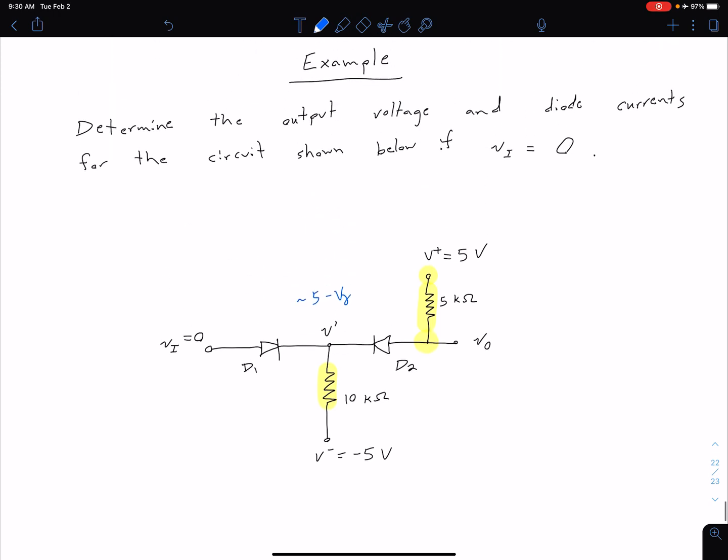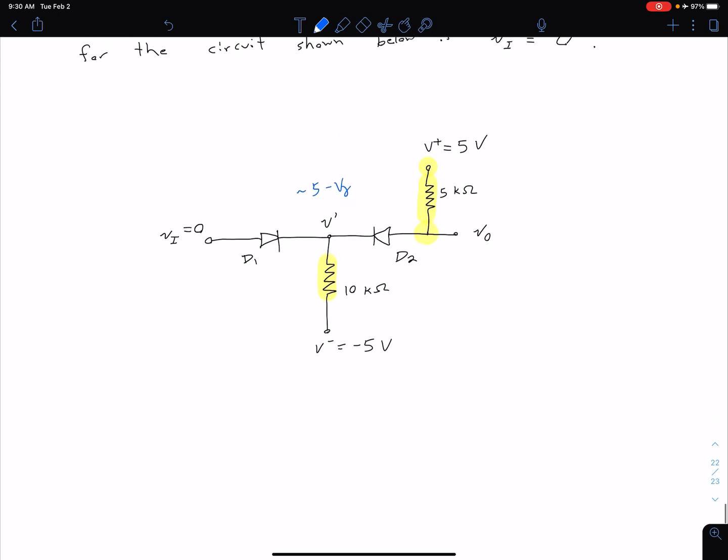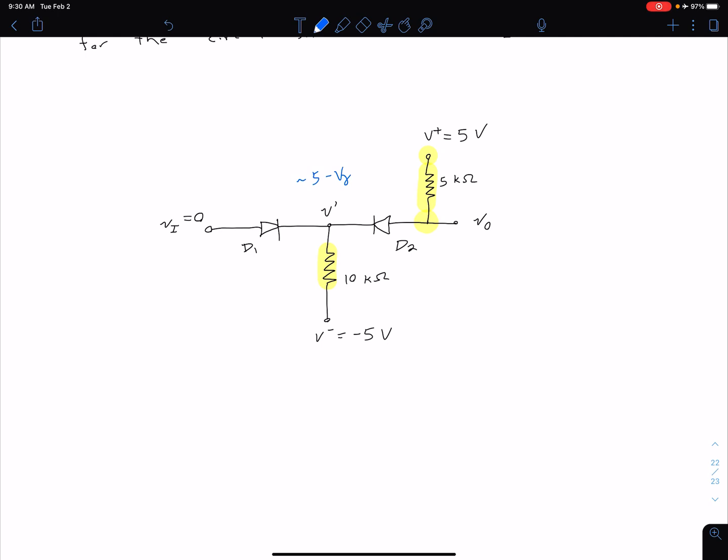And so that wasn't given in the problem statement so we're going to make an assumption about that. But remember V_gamma is typically about 0.7, so that means that this is about 4.3 or maybe a little lower depending on how much voltage is dropped across those resistors.